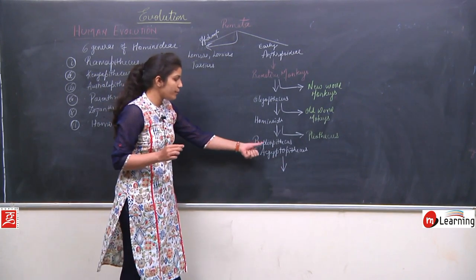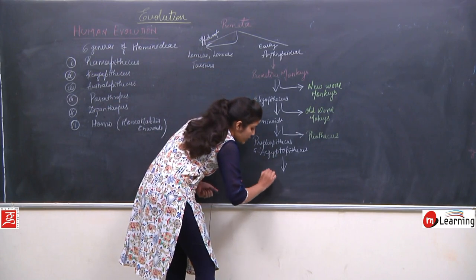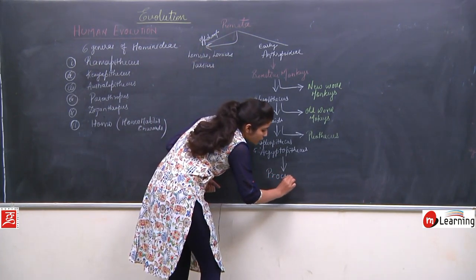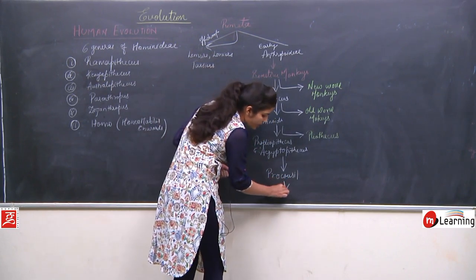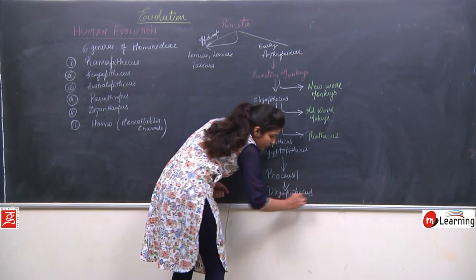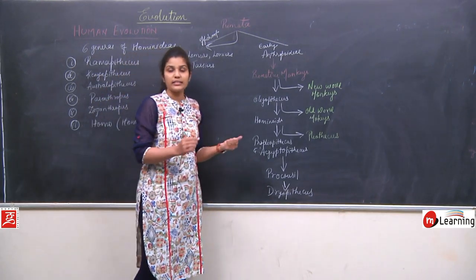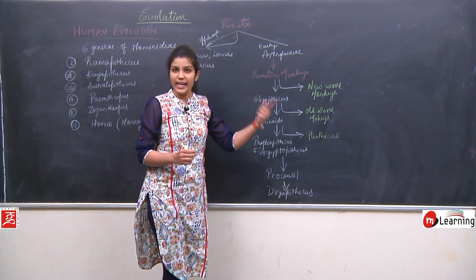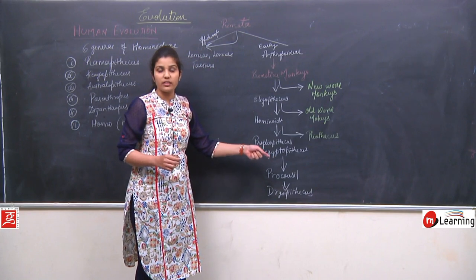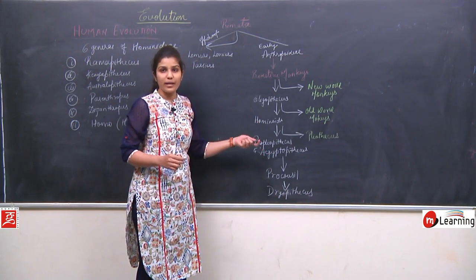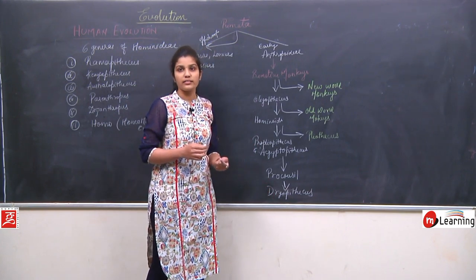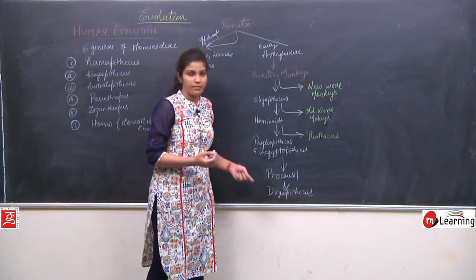From Propleopithecus and Egyptopithecus, the next link in human evolution was Procaucyl. From Procaucyl, the next link was Dryopithecus. Dryopithecus is considered the common ancestor of men and apes. Procaucyl is also sometimes considered a common ancestor of apes and men, but generally Dryopithecus is regarded as the common ancestor.